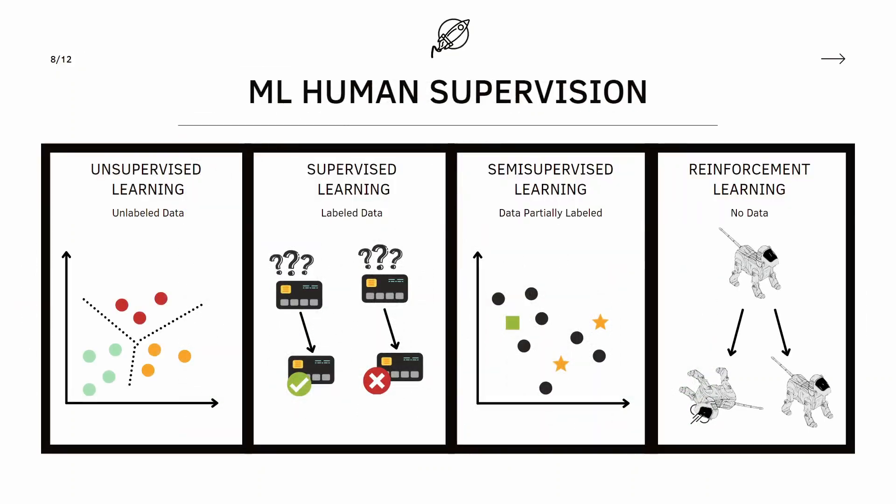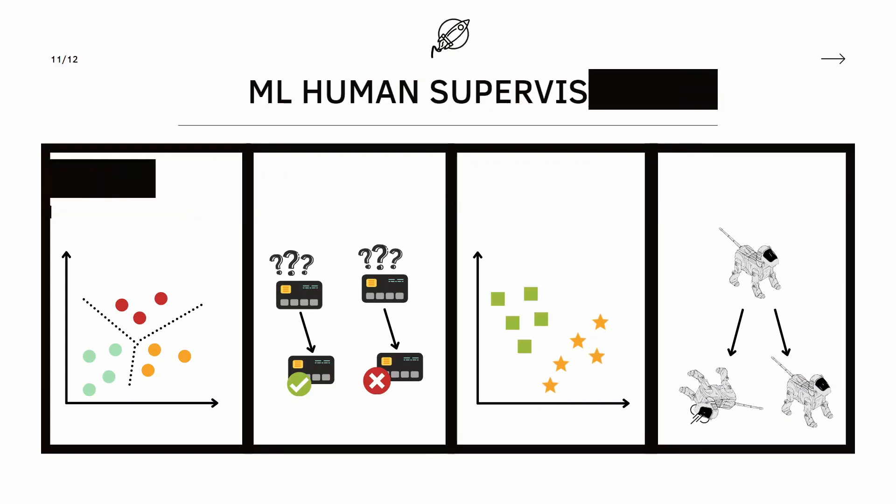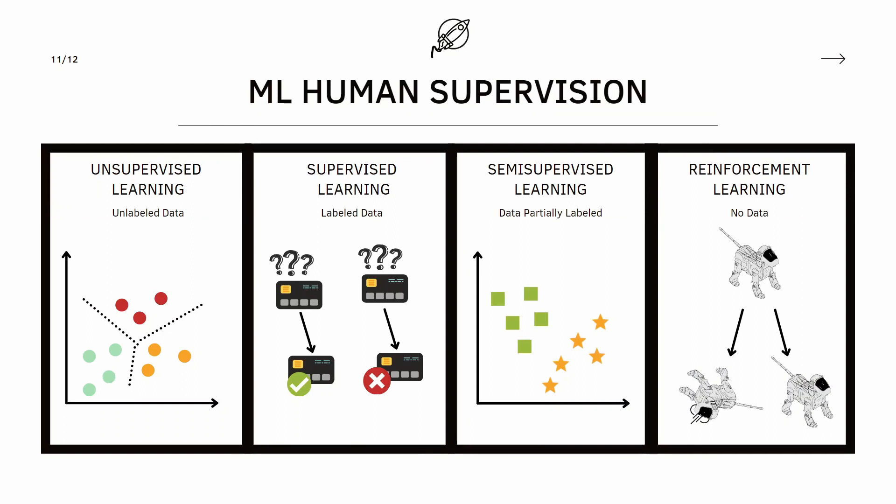That's where semi-supervised learning comes in. In this type of learning, the algorithm is able to deal with partially labeled data. Take a look at this example: we only have a few labels that help us identify data as stars and squares. The algorithm will look at these labels, then cluster the remaining unlabeled data and classify it accordingly. Semi-supervised learning systems use algorithms from both unsupervised and supervised machine learning — grouping similar data with the first and then classifying with the second.